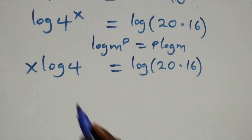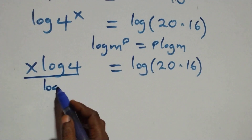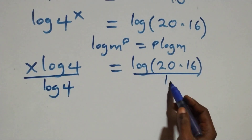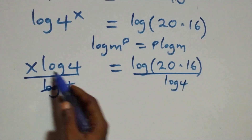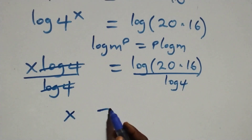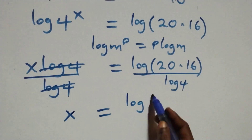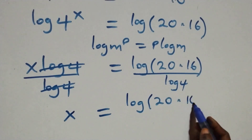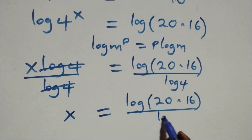Next, we divide both sides by log 4. Log 4 cancels on the left, giving us x equals log of 20 times 16 over log 4.